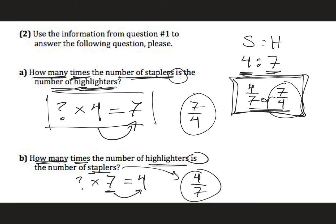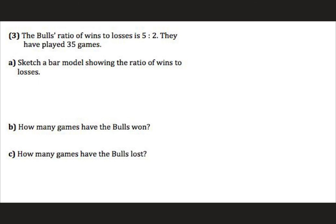Next question. The Bulls' ratio of wins to losses is five to two. They have played 35 games. First we're going to do a bar model. So wins to losses is five to two. So I'm going to do a W and an L. For W I'm going to draw a bar with five blocks. For losses I'm going to draw a bar with two blocks. And I want them to line up right underneath one another. And this is showing my five to two. Now they have played 35 games in total. So I'm going to say that this whole bar model is equal to 35.